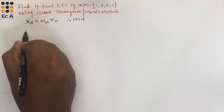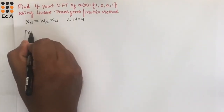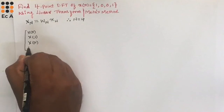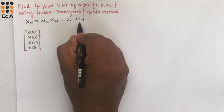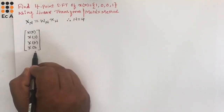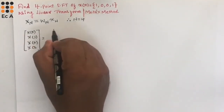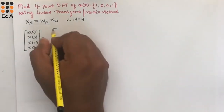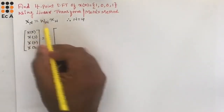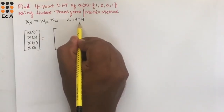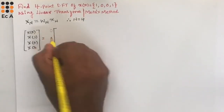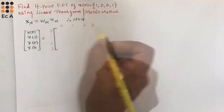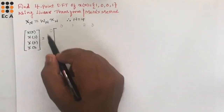Let us write the matrix. The output column vector is X(0), X(1), X(2), X(3) — a 4×1 matrix. For W_N we need a 4×4 matrix. One of the easiest methods to fill in this matrix is: since N = 4, write 0, 1, 2, 3 along the rows and 0, 1, 2, 3 along the columns. This helps us find the power of W_N for each element.